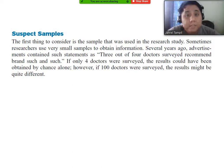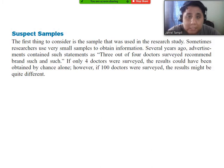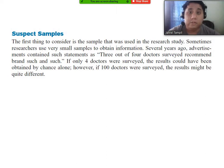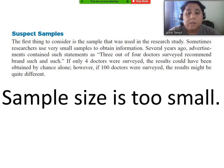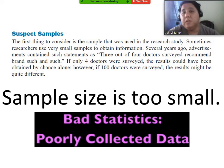Advertisements nowadays still use that format, but now it has become '9 out of 10.' Some might say it's just a proportion, but it is still quite a small sample because we never know if it's really a proportion or if they just surveyed 10 people. In that case, the sample size is too small and will result in poorly collected data. In future lessons, we will learn how small or how big a sample size should be.